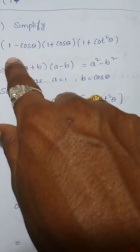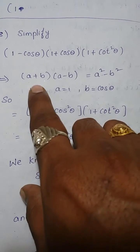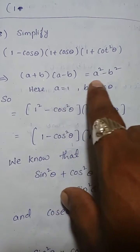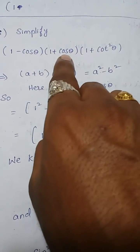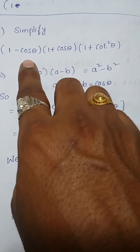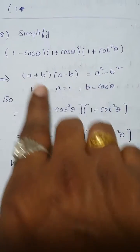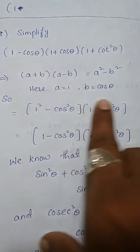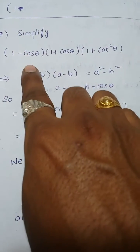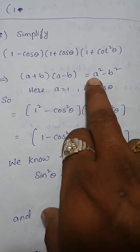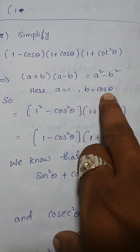Here, if you observe, (1 minus cos theta) into (1 plus cos theta) is looking like (a minus b) into (a plus b), which is equal to a square minus b square. So here, a value is nothing but 1 and b value is nothing but cos theta.